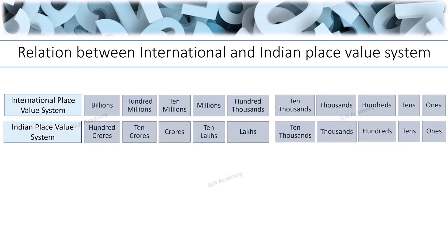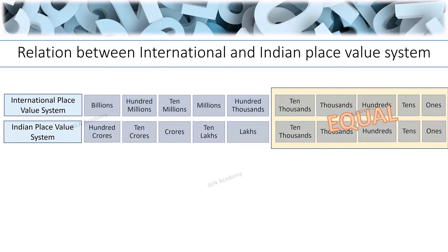You might have observed by now which positions are the same in both number systems and which are different. Look at the positions such as ones, tens, hundreds, thousands, and ten thousands which are highlighted here. These positions are the same in both number systems.